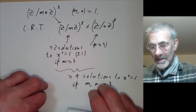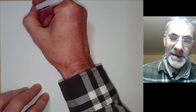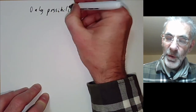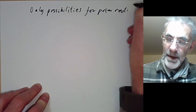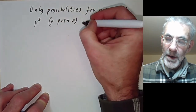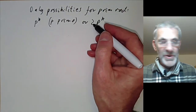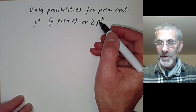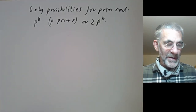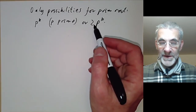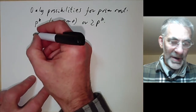This gives us the only possibilities for a number to have a primitive root: it must be of the form p^k for p prime, or 2·p^k. We allow a factor of 2 because m and n both had to be at least 3, so a factor of 2 co-prime to an odd prime power is permitted. These are the only numbers that cannot be written as a product of two co-prime integers both ≥ 3. But not all of these have primitive roots.